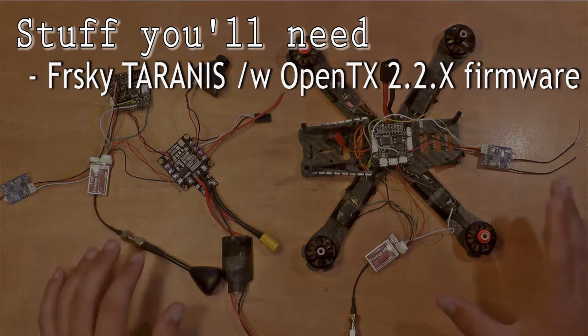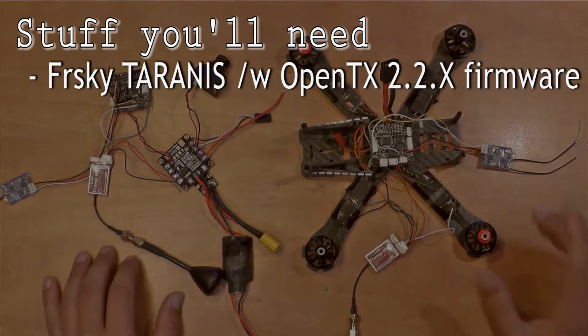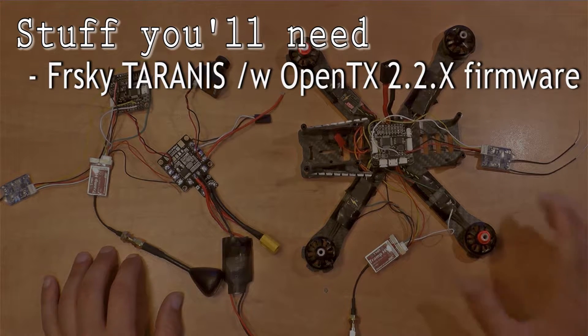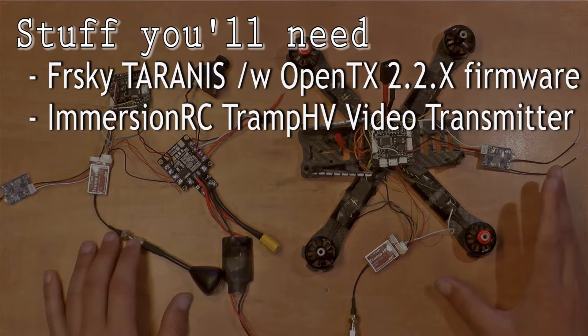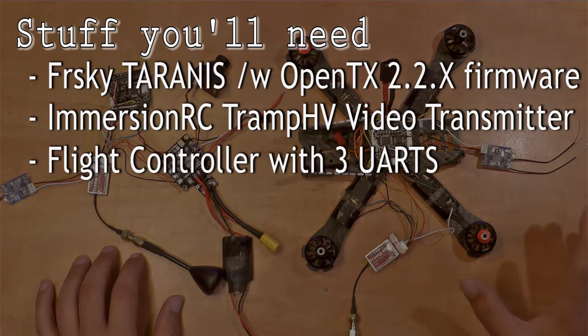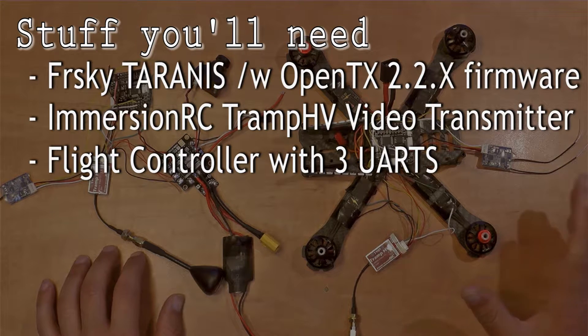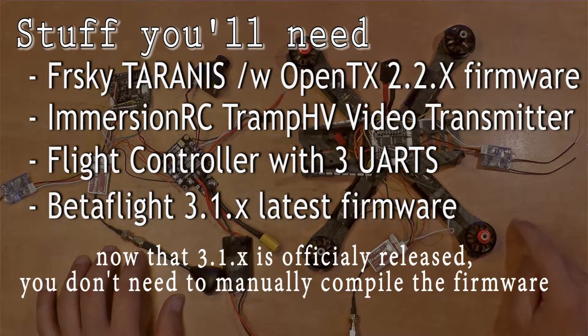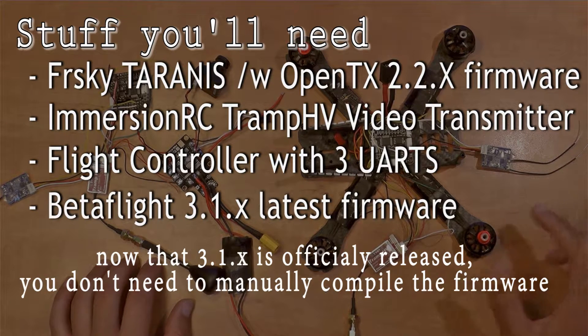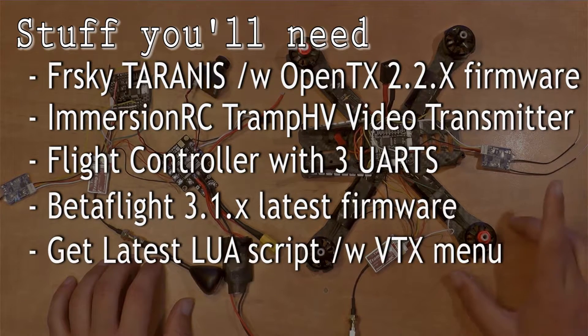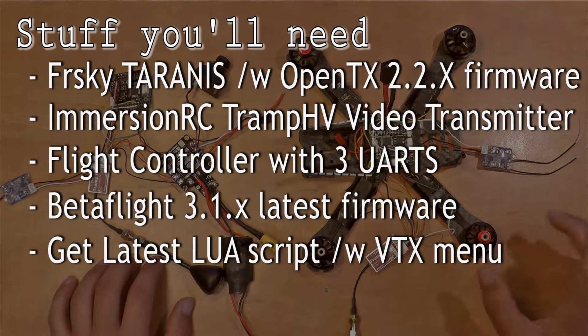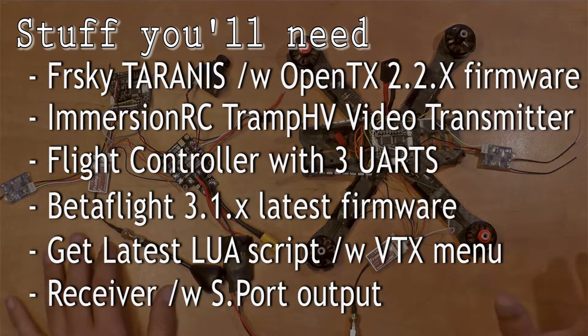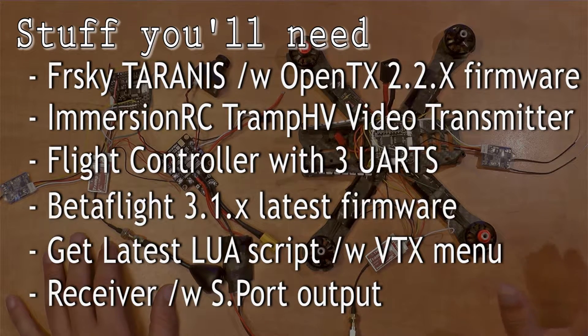You will need an FR Sky Taranis radio controller with an OpenTX 2.2 firmware. This firmware supports the Lua script feature, Immersion RC Trump HV video transmitter, flight controller with free UARTs, most every FC will be good, compile a special Betaflight hex file depends on your FC target and flash it. You need the latest Lua script with the VTX setting menu and a receiver with a telemetry port, S port, for example X4R or XSR.